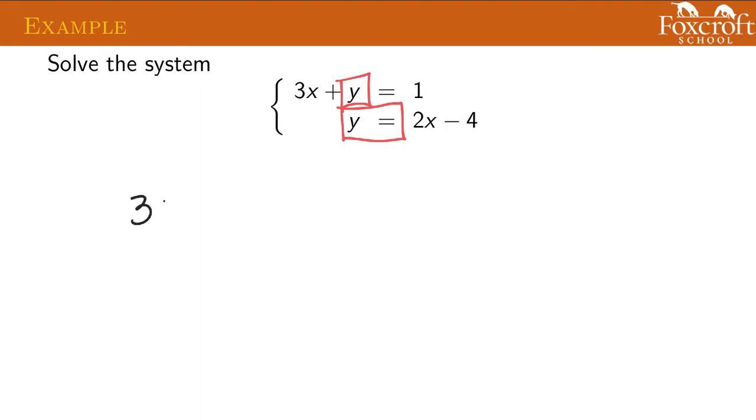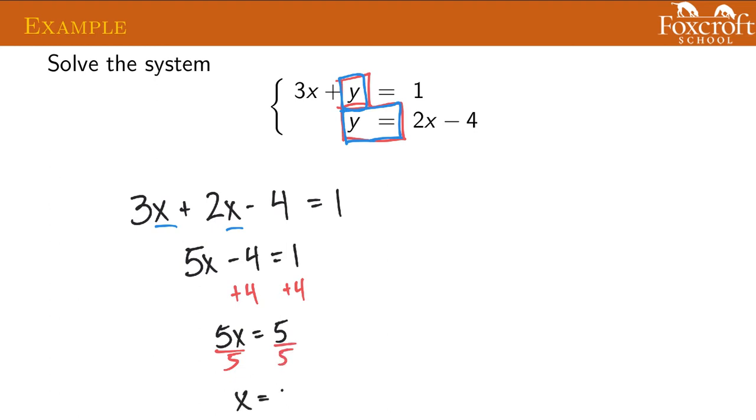So our top equation now is going to be 3x. Instead of y, we know y is equal to 2x minus 4. And by substituting this y equals part in for this y, you can see the equation down here only has x's and no y's. And that's a good thing because if it only has x's, we can figure out what the answer for x is. So I'm going to combine the like terms, add 4, and divide by 5. Then I get x equals 1.